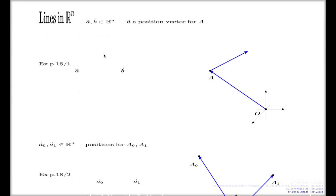Lines in Rn is a geometric term. We've never seen lines in dimensions higher than three, but we're going to base our definitions, methods, and strategies on our experience with three dimensions. Normally in Rn, the concept called a line is defined as follows. In order to present the concept, you need two vectors from Rn — vectors in Rn are simply a column of numbers of height n.